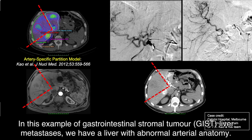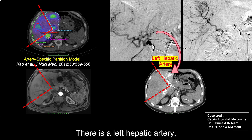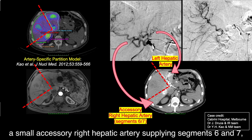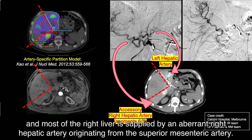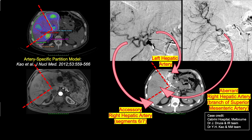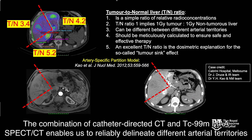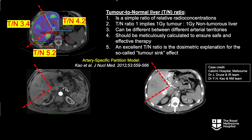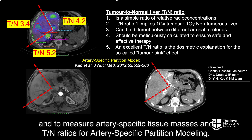In this example of gastrointestinal stromal tumour liver metastasis, we have a liver with abnormal arterial anatomy. There is a left hepatic artery, a small accessory right hepatic artery supplying segments six and seven, and most of the right liver is supplied by an aberrant right hepatic artery originating from the superior mesenteric artery. The combination of catheter-directed CT and MAA SPECT-CT enables us to reliably delineate different arterial territories and measure artery-specific tissue masses and TN ratios for artery-specific partition modelling.